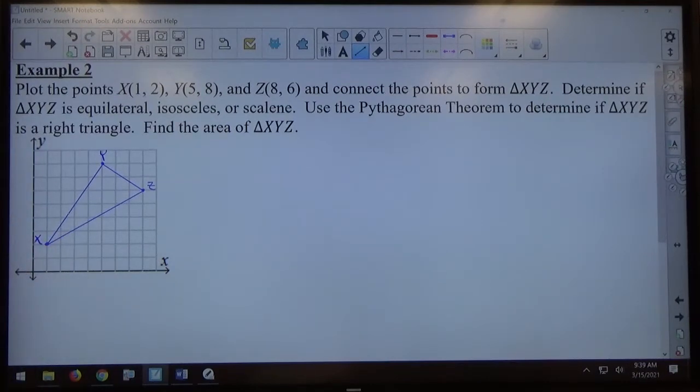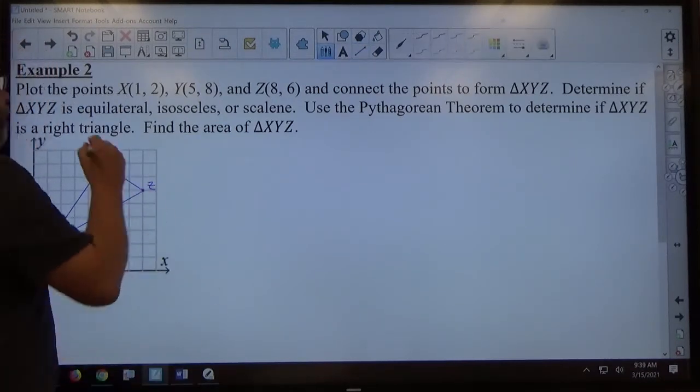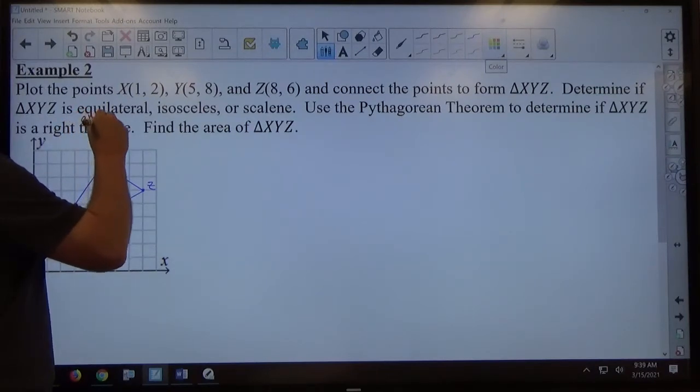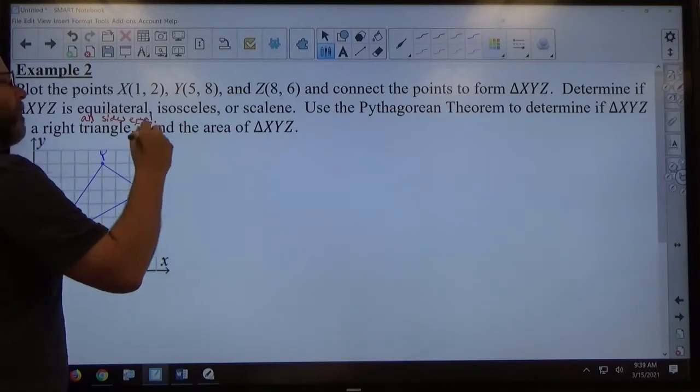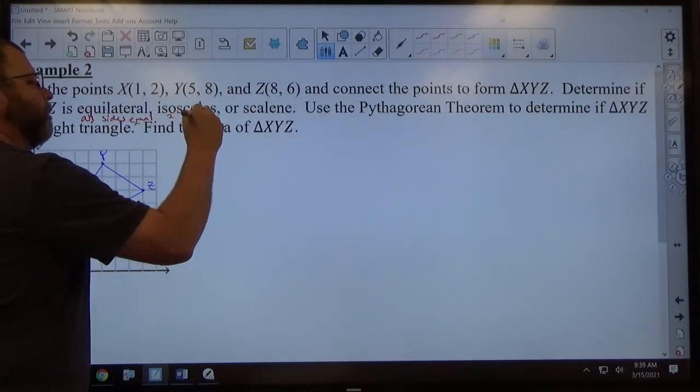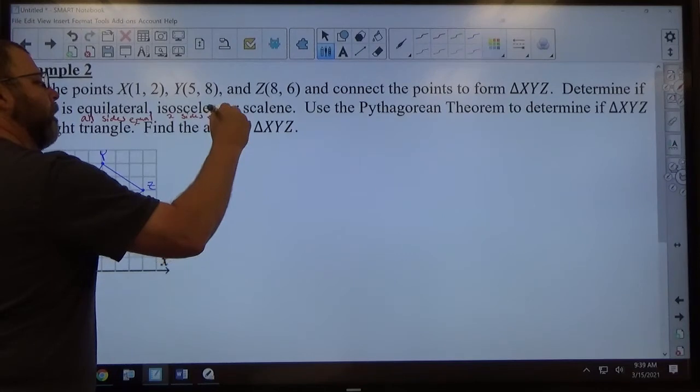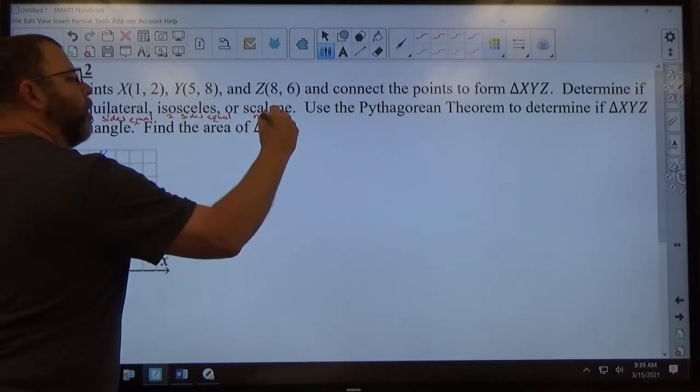Determine if XYZ is equilateral, isosceles, or scalene. Use the Pythagorean Theorem to determine if XYZ is a right triangle. Find the area of triangle XYZ. So first off, they want us to determine if it's equilateral, isosceles, or scalene. Remember, equilateral means all sides are equal.